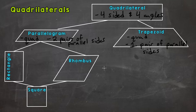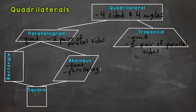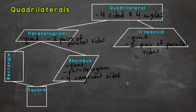Now let's look at rhombus. A rhombus is a quadrilateral and it is a parallelogram, so it has two pairs of parallel sides, but we give it one more specific characteristic: a rhombus has four congruent sides — congruent means equal, so all sides have to be the same length. The best name for a shape that is a quadrilateral with two pairs of parallel sides and four congruent sides is rhombus.